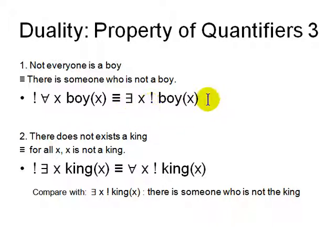And similarly, if it's not the case there exists x, x is a king, same as for all x, it's not the case x is a king. So there is no king.